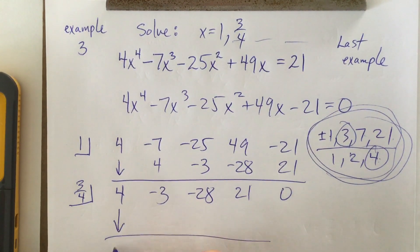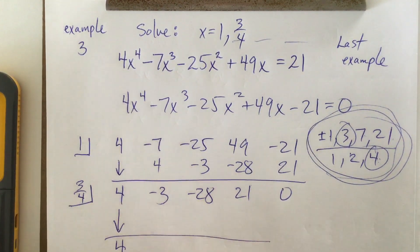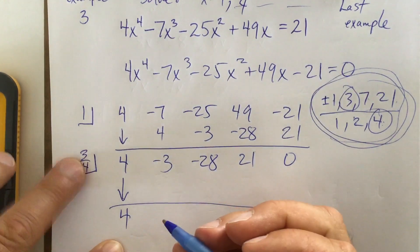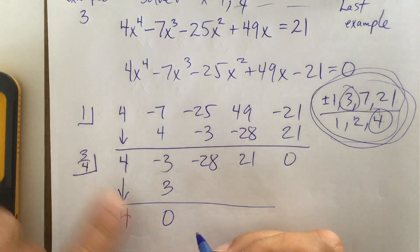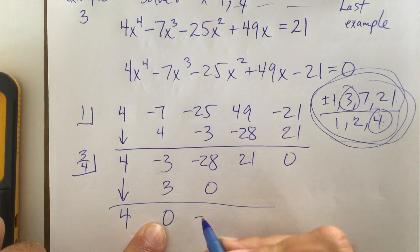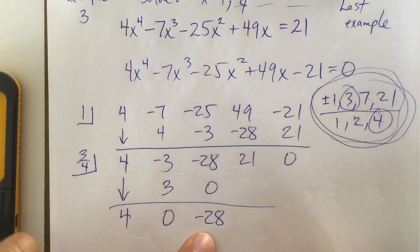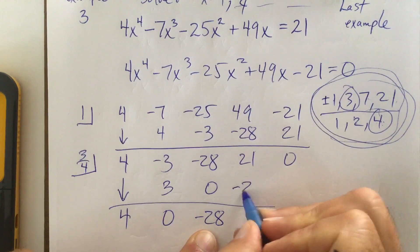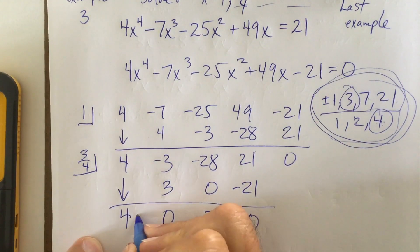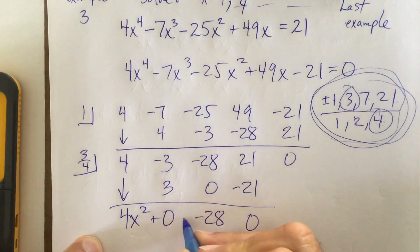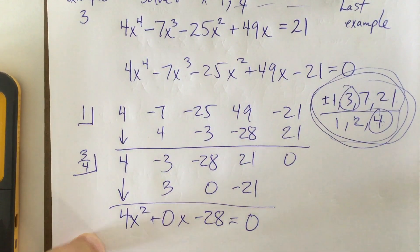So, let's do this. I'm going to bring down the four. What is three-fourths of four? Three-fourths of four is three. There's my zero. Three-quarters of nothing is nothing. That's negative 28. Three-quarters of that is negative 21. And, I add down, I get zero. So, guess what? 4x squared plus no x's minus 28 equals zero.